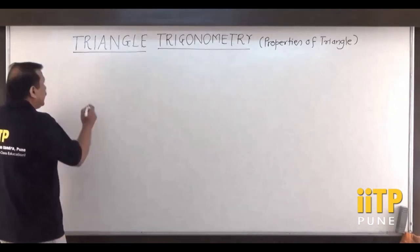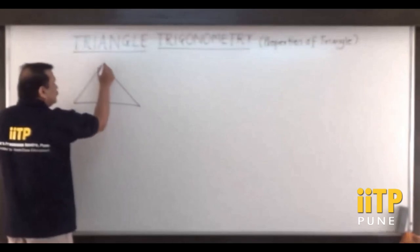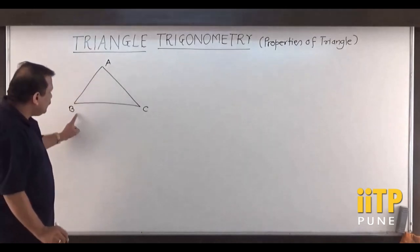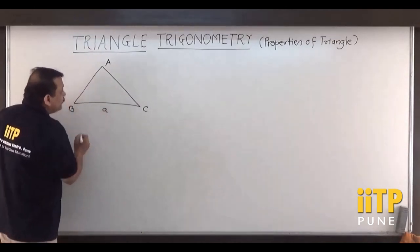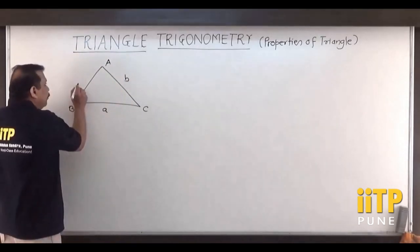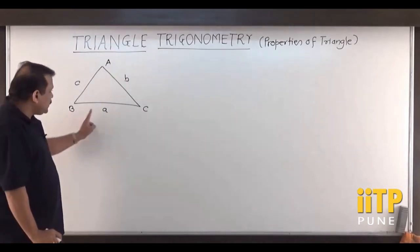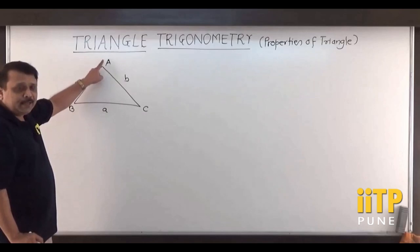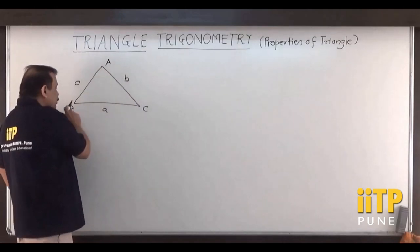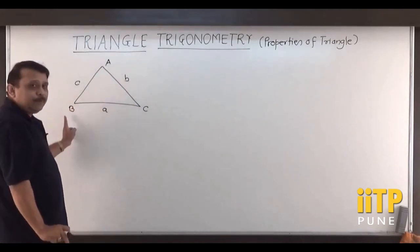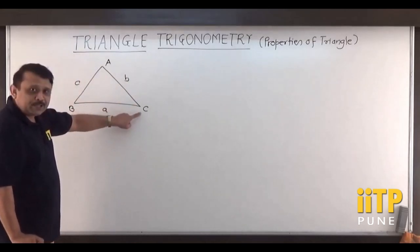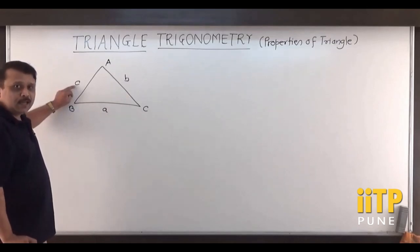Let us consider a triangle ABC. It has three sides: BC denoted by small a, AC denoted by small b, and AB denoted by small c. So BC is opposite to vertex A, denoted by the corresponding small letter. AC is opposite to vertex B, and AB is opposite to vertex C, each denoted by their corresponding small letter.